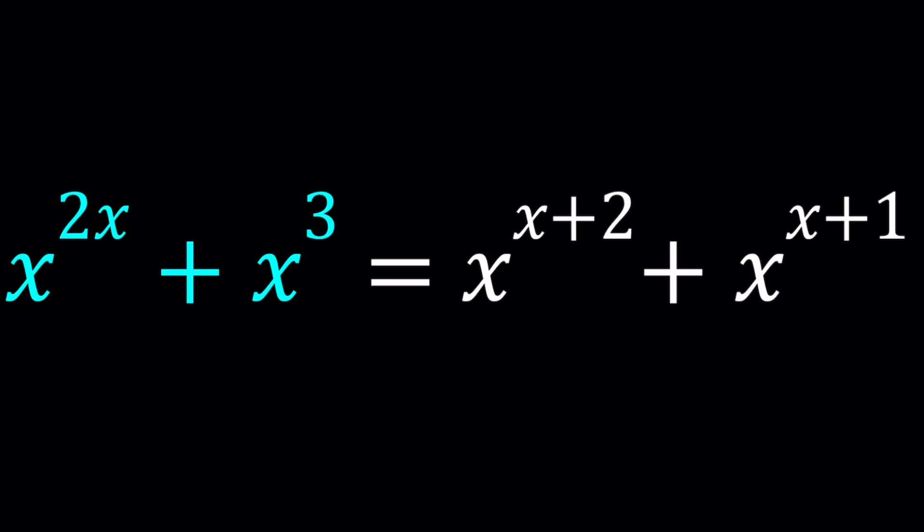We have x to the power 2x plus x cubed equals x to the power x plus 2 plus x to the power x plus 1. So a very exponential equation. To solve this problem, we're going to put these terms together and then come up with a quadratic equation. Let me show you how.